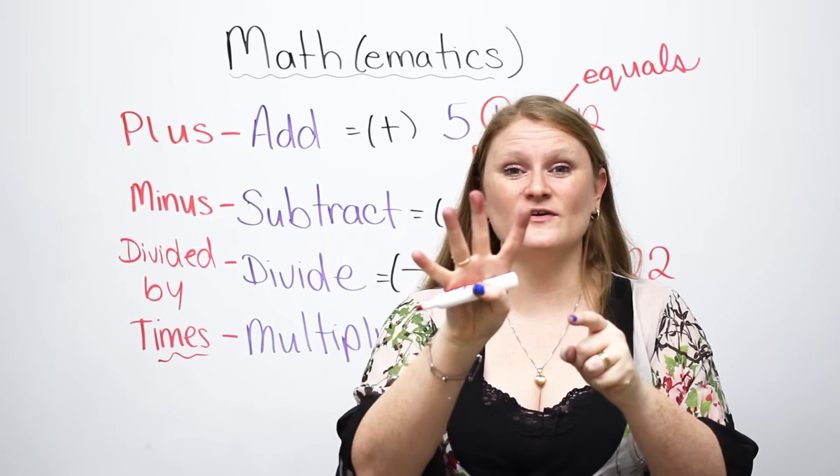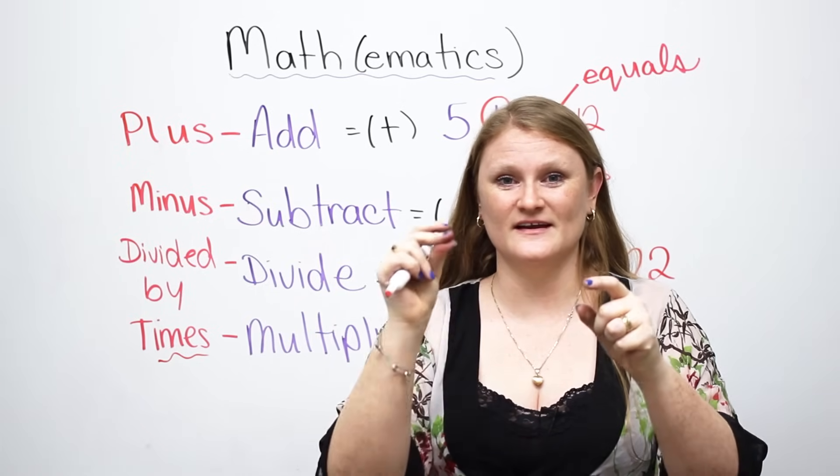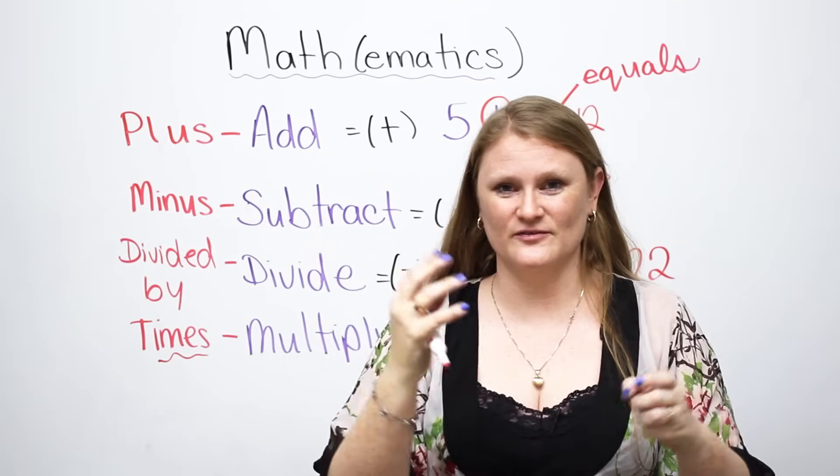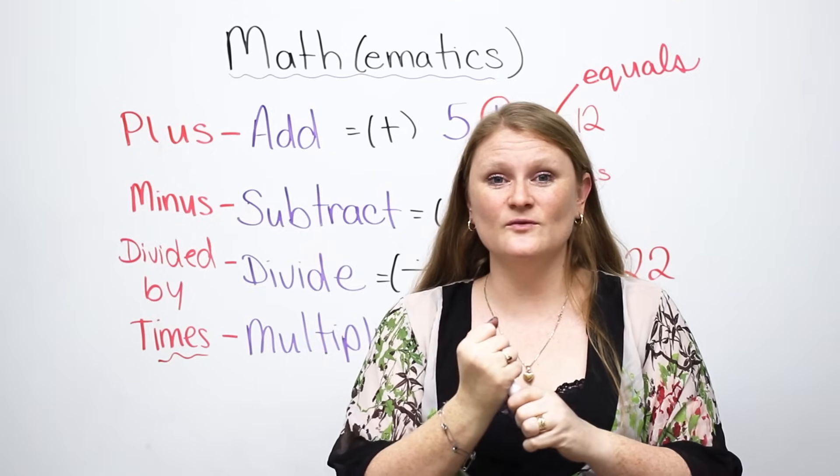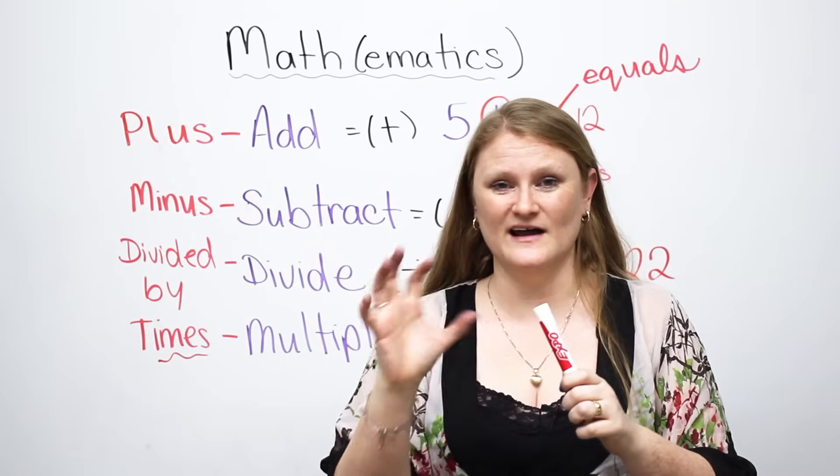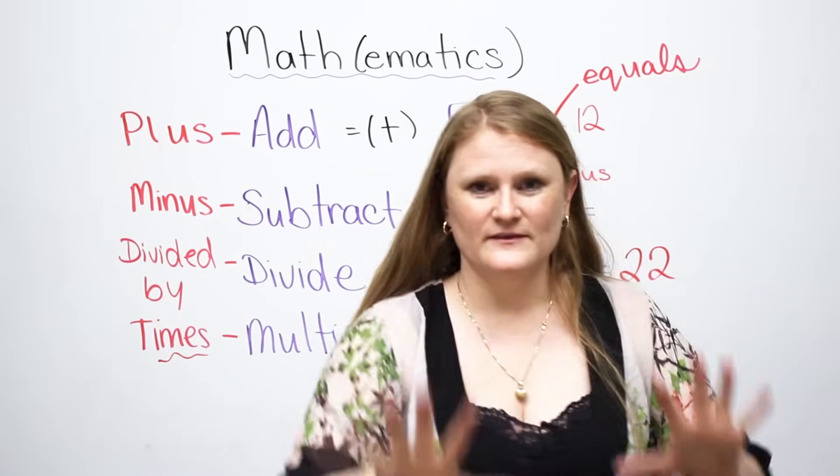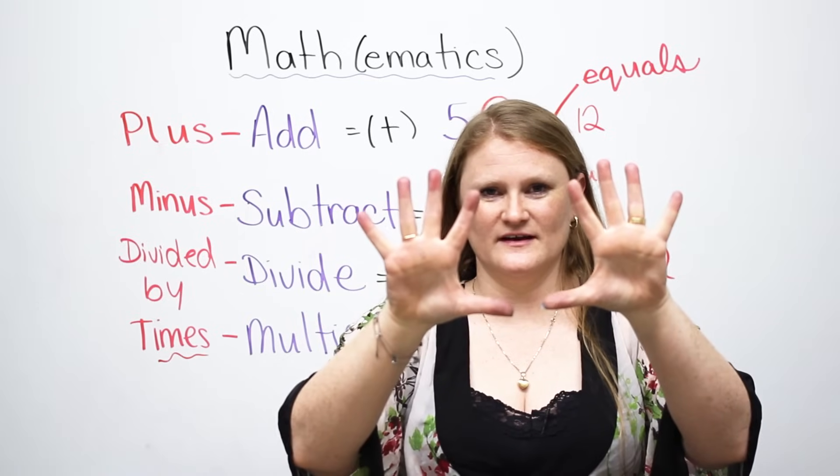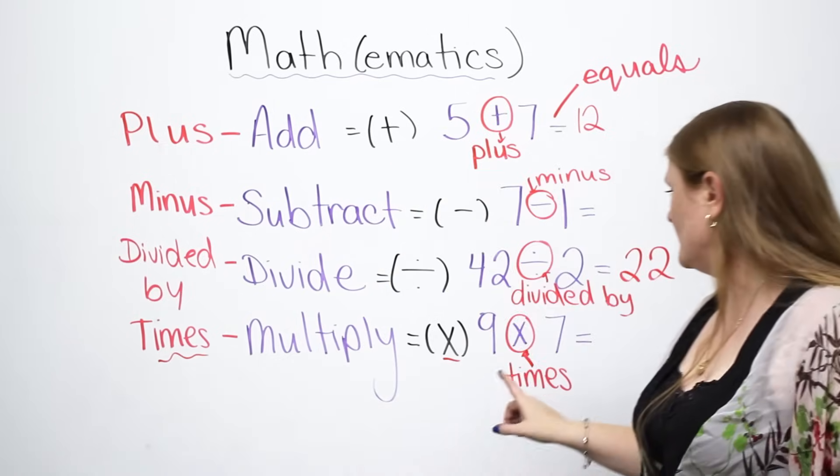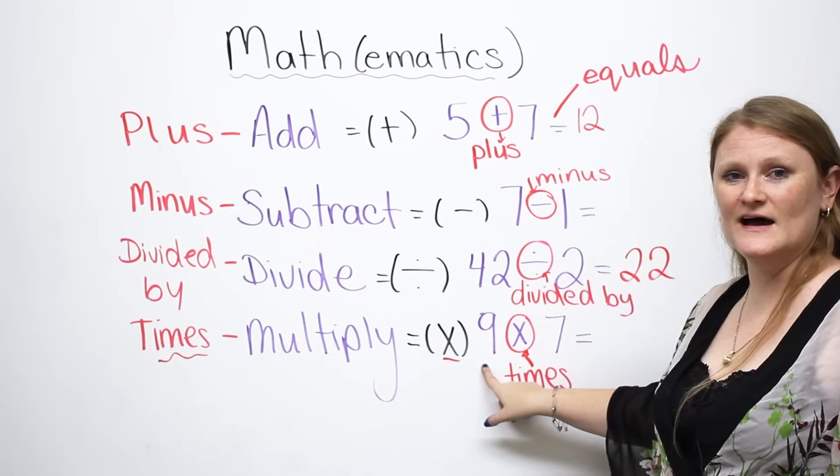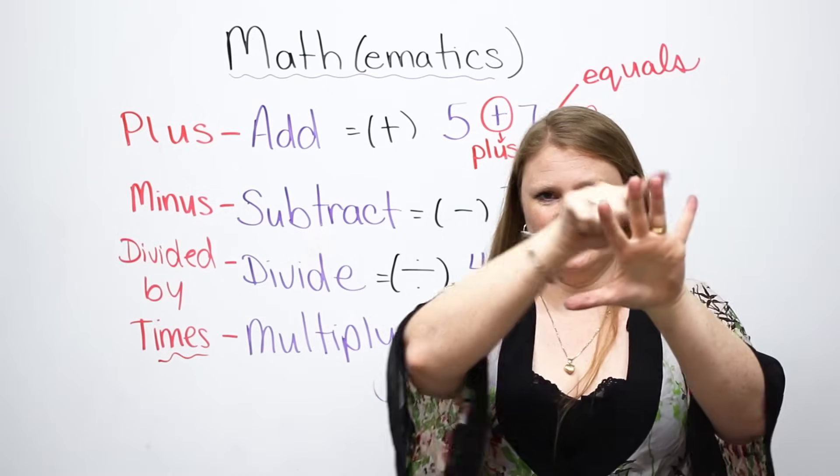My grade four teacher taught me this. This is the only thing that I can do like magic for math. If you want to figure out what nine times something is, up to ten, you're going to take your fingers, and you're going to count. For example, if I want to do nine times seven, I do this.